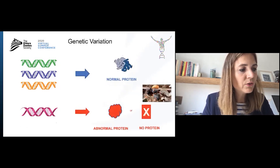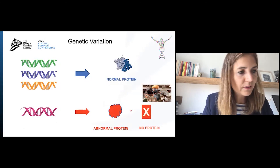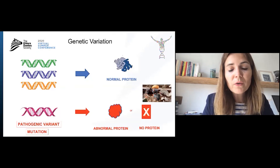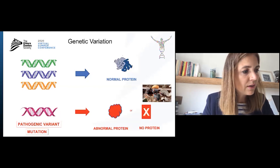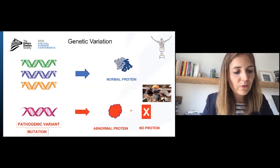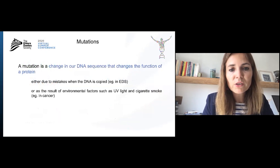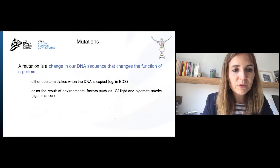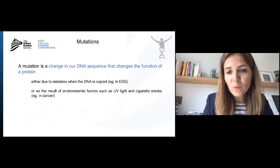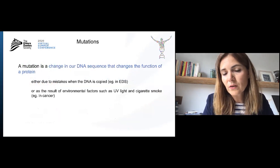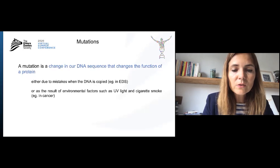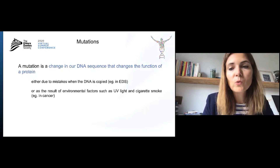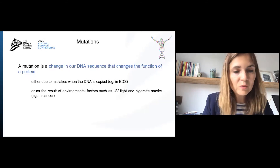If, however, this new version of the gene creates a different end product, it's called pathogenic. It can lead to an abnormal product or to the absence of the protein, causing changes in the function or presence of the protein, which may cause disease. The word mutation refers to a pathogenic variant. A mutation is a change in our DNA sequence that changes the function of a protein, either due to mistakes when the DNA is copied — as is the case in Ehlers-Danlos syndrome and other heritable connective tissue disorders — or due to environmental factors such as ultraviolet light and cigarette smoke, which is the case in some types of cancers, but not in EDS.